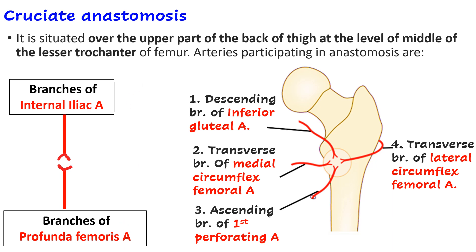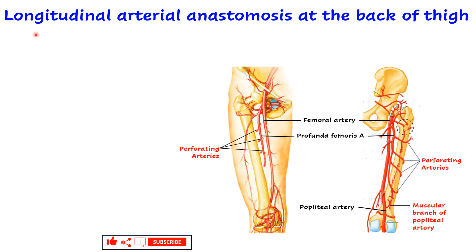Then we have another anastomosis present in the back of the thigh — the longitudinal arterial anastomosis. Before looking at which arteries participate, let us identify the arteries: this is the femoral artery, this is the profunda femoris artery, and we can see the perforating branches arising from it.